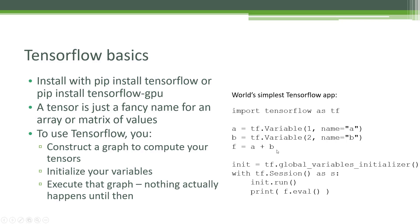Here's where the magic starts to happen. We say F equals A plus B, and you might think that would put the number three into the variable F, but it doesn't. What F actually is, is your graph — the actual connection you're building up between the A and B tensors. F equals A plus B does nothing except establish that relationship between A and B, and their dependency together on the F graph you're creating.